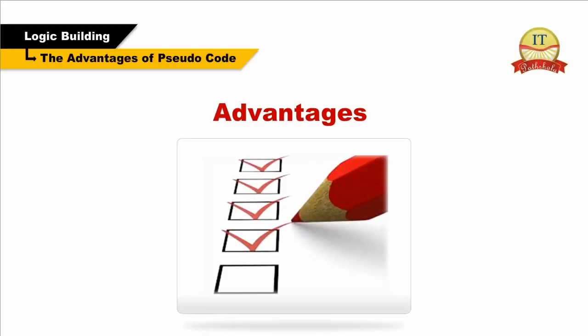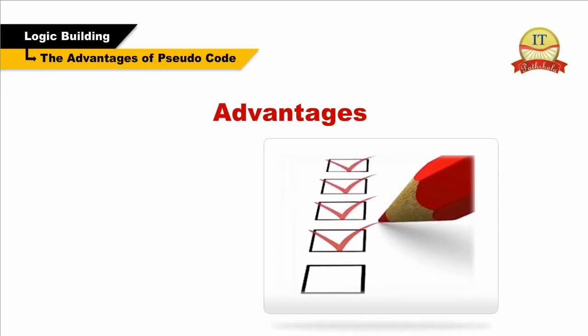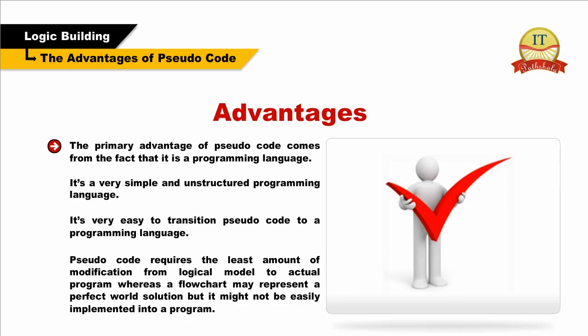The advantages of pseudocode: The primary advantage of pseudocode comes from the fact that it is a programming language — a very simple and unstructured one. It is very easy to transition pseudocode to a programming language. Pseudocode requires the least amount of modification from logical model to actual program, whereas a flowchart may represent a perfect solution but might not be easily implemented into a program.